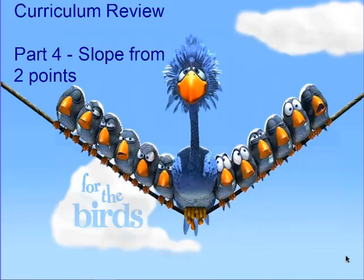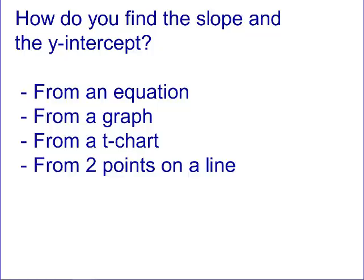Hello class, today we're going to talk about slope again, but this time we're going to do it the fourth way: slope from two points. So let's begin. If you remember from yesterday's lesson, we found out that there were four different ways of finding slope and y-intercept. You could find slope from an equation, from a graph, from a t-chart, and then what we're going to talk about today — from two points that lie on a line.